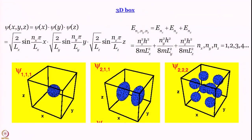Quickly increasing dimensionality further: for a 3D box, the wave function is a product of three sine functions and the energy is a sum of three terms with quantum numbers nx, ny, nz. Depicting the wave function becomes challenging because we need four dimensions — three for the box and one for the wave function value — which can be handled by taking cross-sections or using color as a fourth parameter.